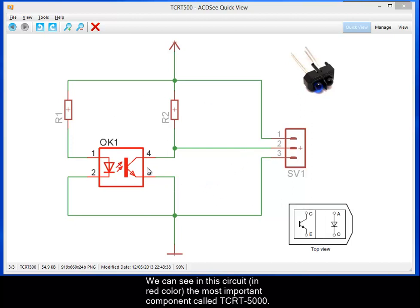We can see in the circuit in red color the most important component, the TCRT 5000, our reflective optical sensor.